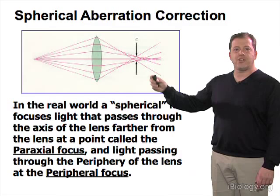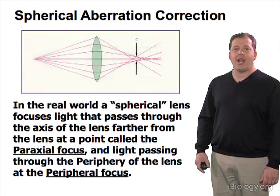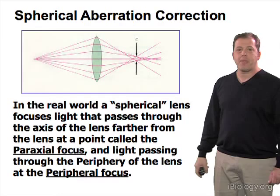Spherical aberration, as shown in this figure here, is the uneven focus of light axially — light that passes through the periphery of the lens focuses closer to the lens, while light that passes through the axis of the lens focuses further away from the lens.